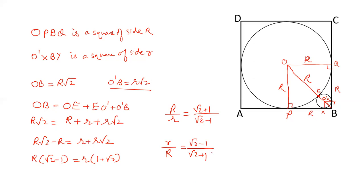We can rationalize the denominator by multiplying by root 2 minus 1 over root 2 minus 1. The numerator becomes root 2 minus 1 whole square, which equals 2 plus 1 minus 2 root 2, that is 3 minus 2 root 2. The denominator is 2 minus 1, that is 1.